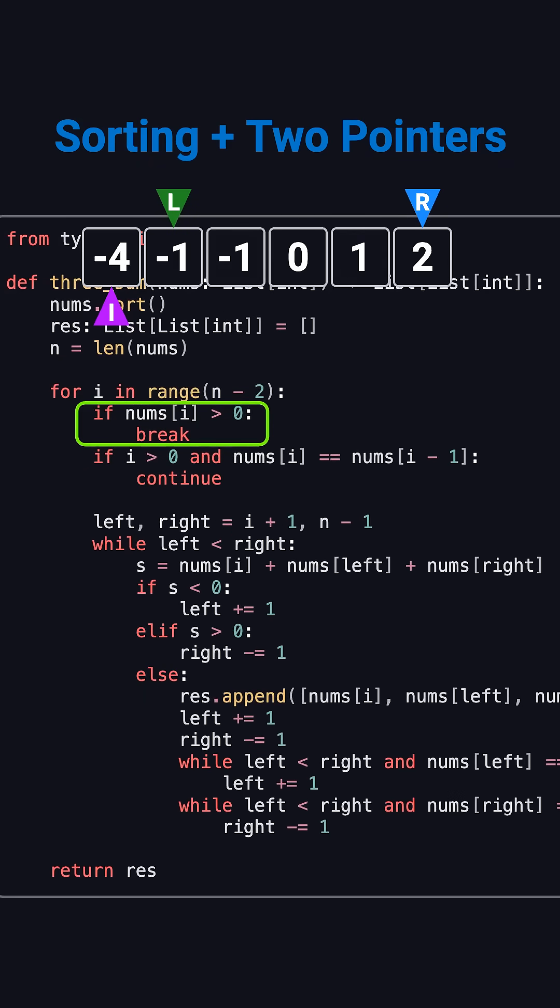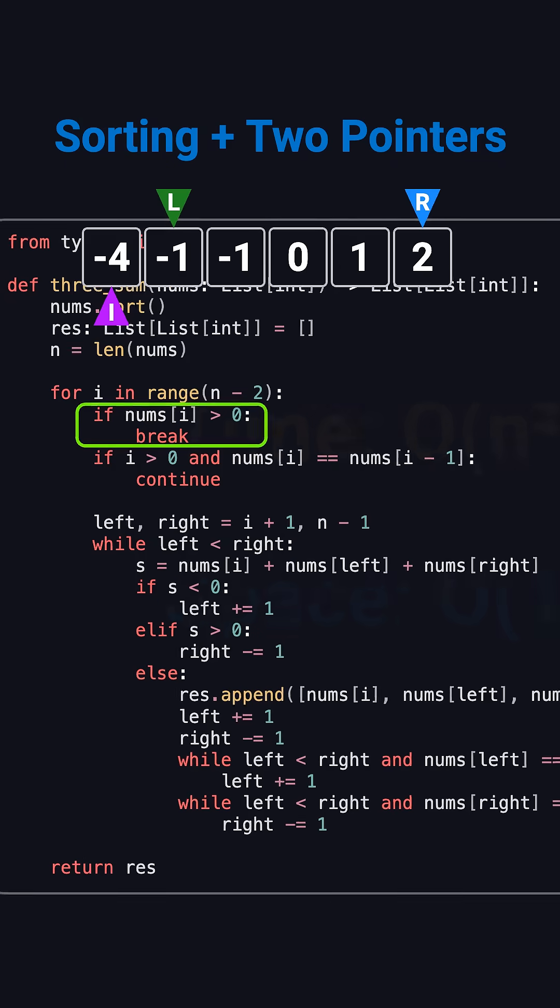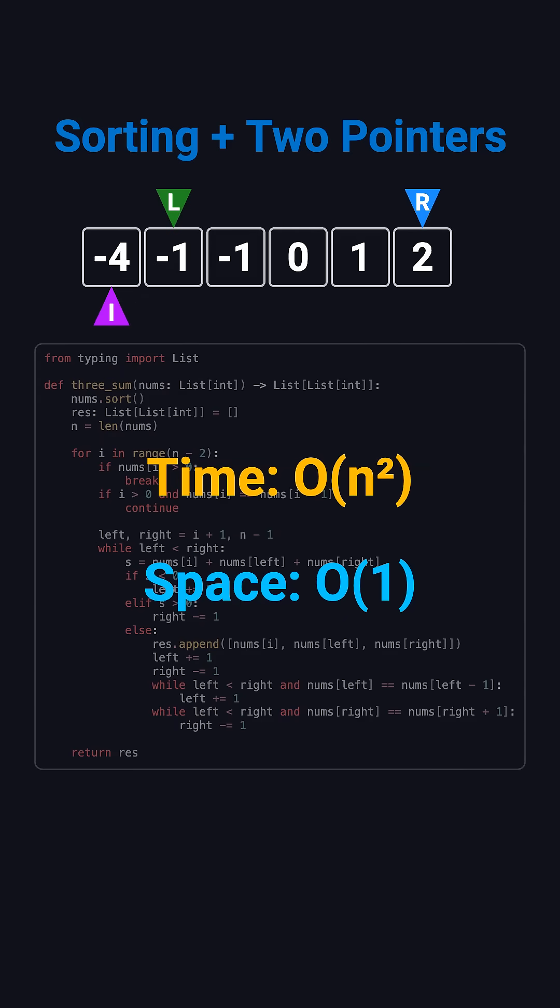Additionally, if the number at index i is greater than 0, we can stop early because no triplet beyond this point can sum to 0. This approach runs in O of n squared time and uses O of one extra space.